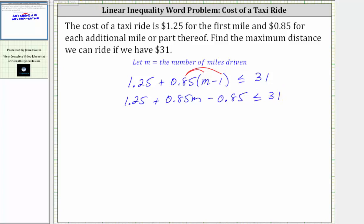And now we combine like terms. We have two constant terms on the left. 1.25 minus 0.85 is equal to 0.40, or just 0.4, which gives us 0.4 plus 0.85m is less than or equal to 31.